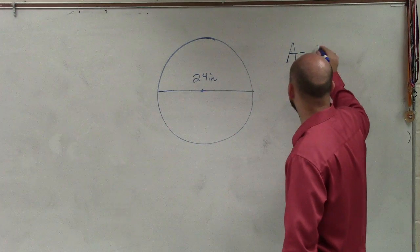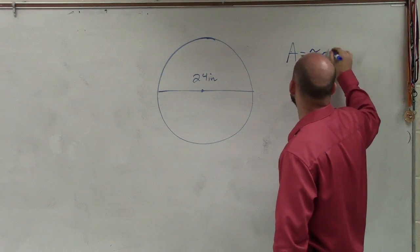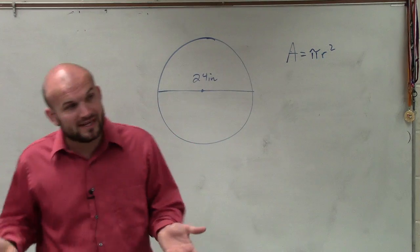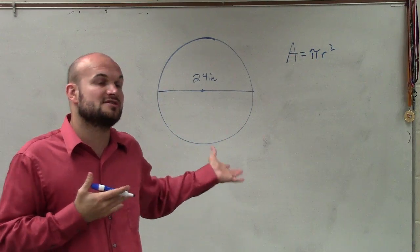Area of a circle equals pi times r squared. So therefore, we need to determine what the radius is. So we need to look at this figure, Ashley, and say, what do we have?